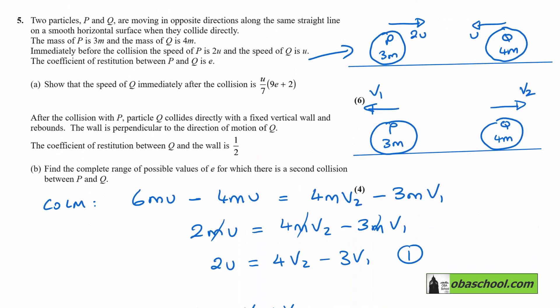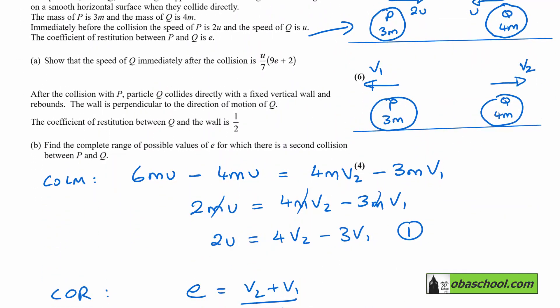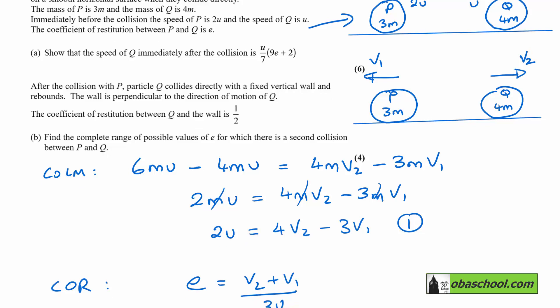So let's go back to the question. After the collision with P, particle Q collides directly with a fixed vertical wall and rebounds. The wall is perpendicular to the direction of motion of Q. The coefficient of restitution between Q and the wall is a half. Find the complete range of possible values of E, for which there is a second collision between P and Q.